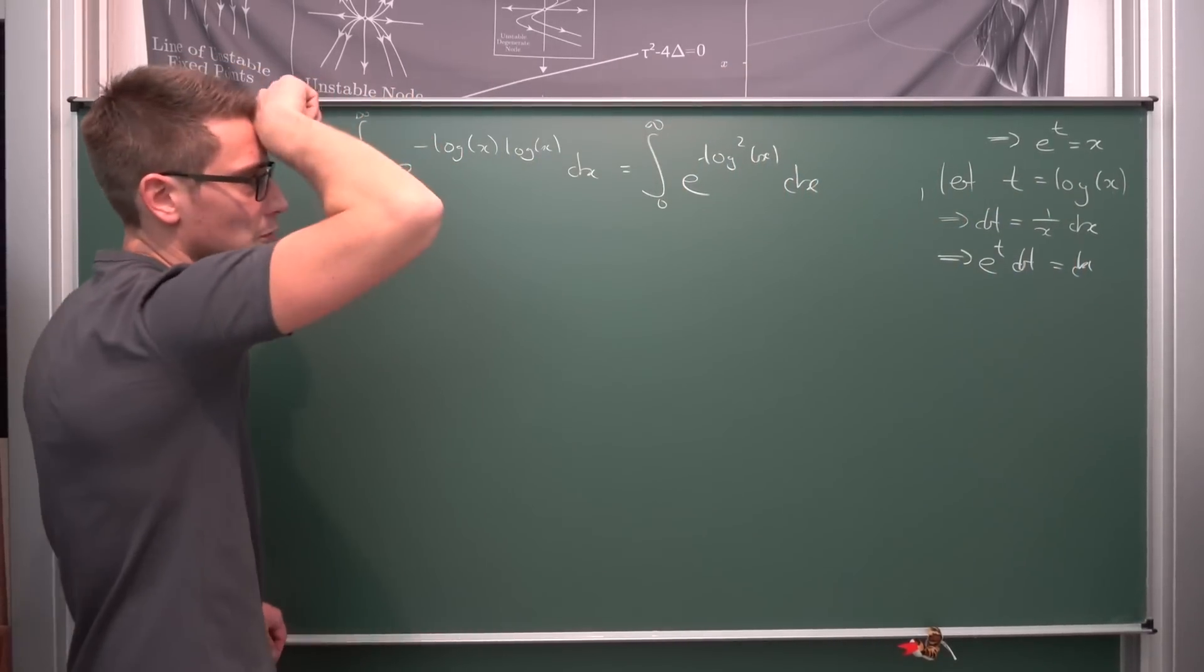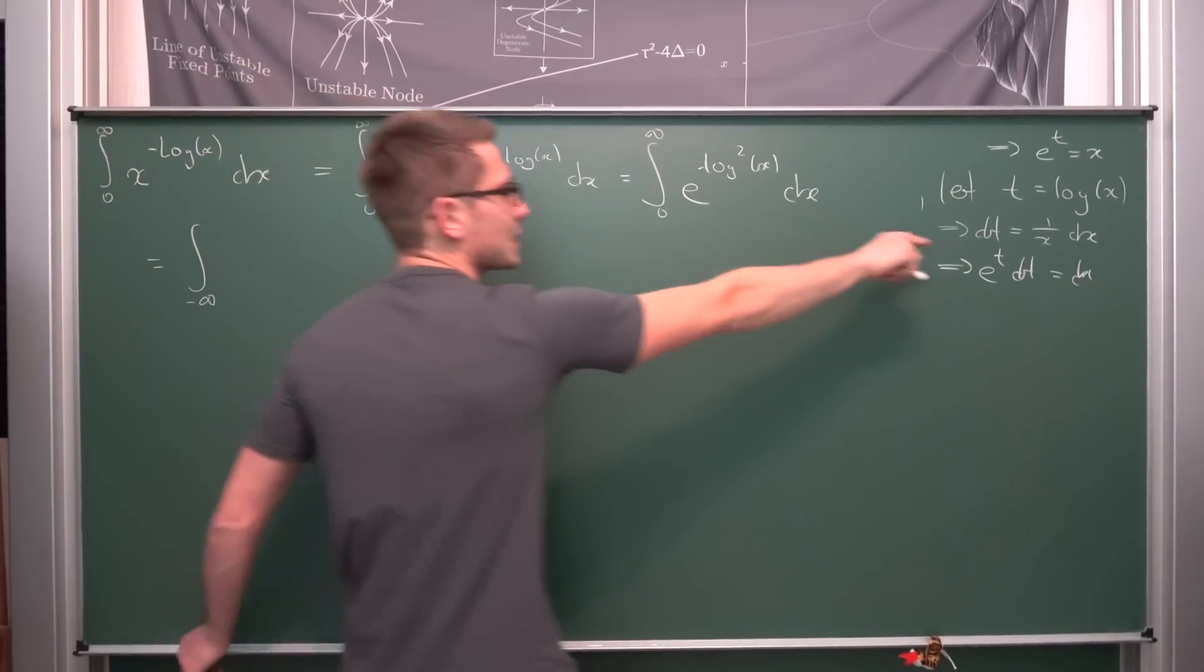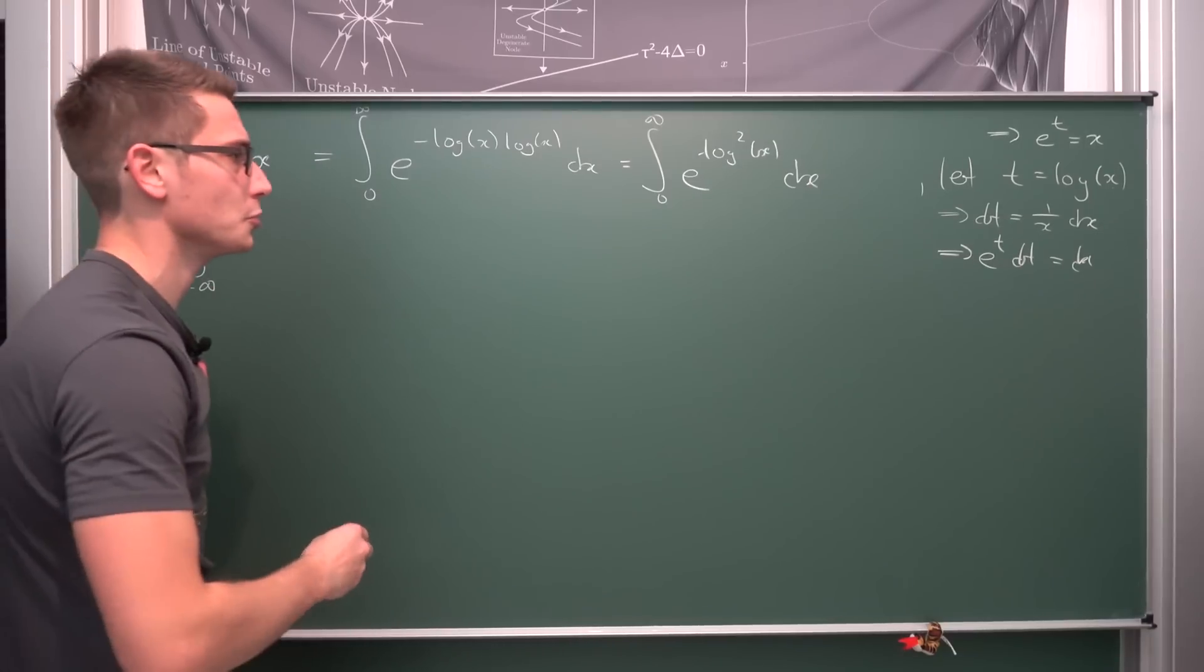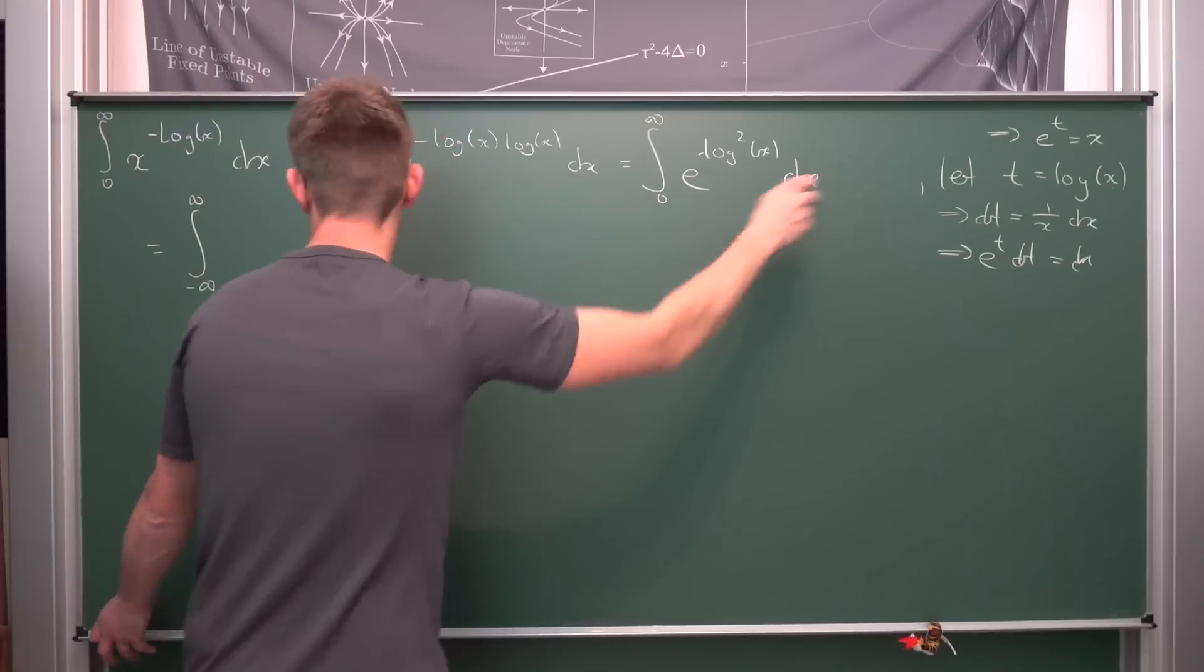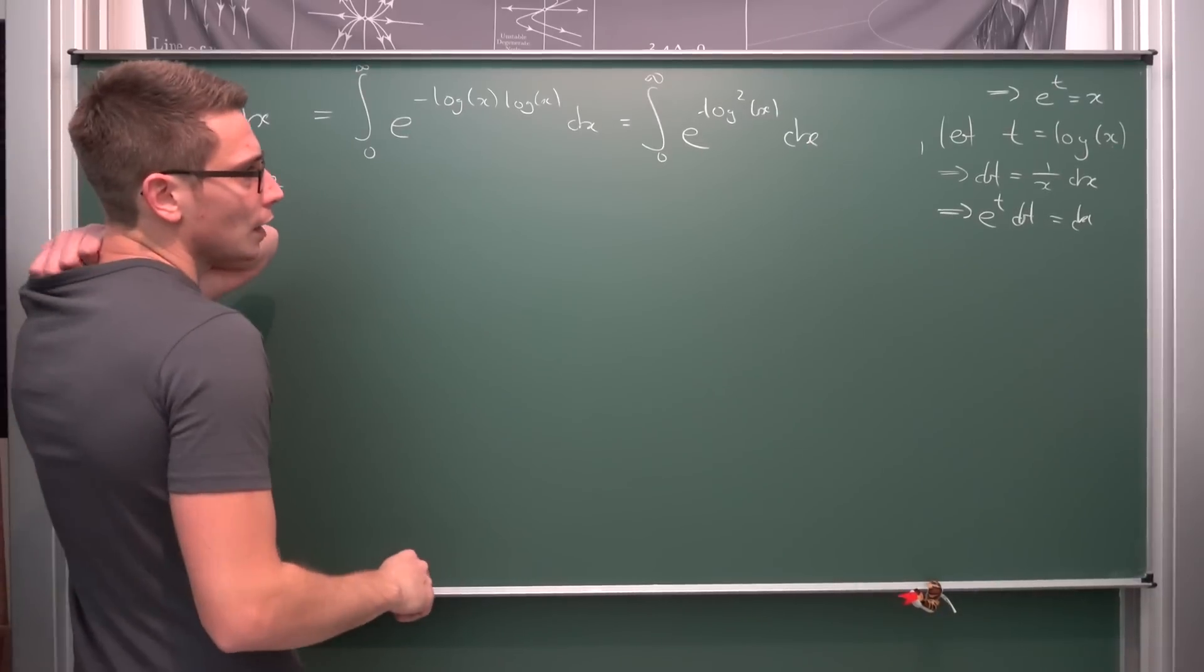If we let the limit as x equals 0 here, then log of 0 goes to negative infinity. If we let x go to infinity, log of x is strictly increasing, giving us infinity too.